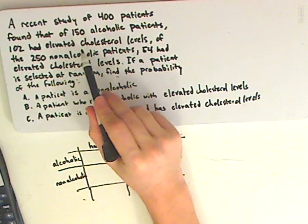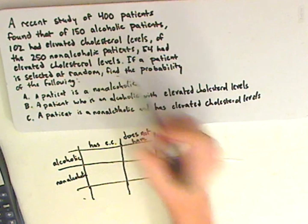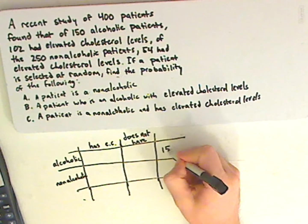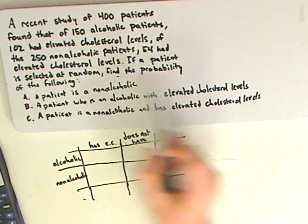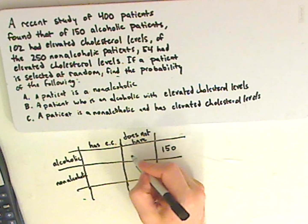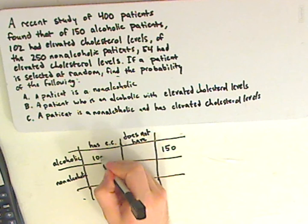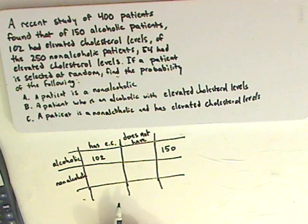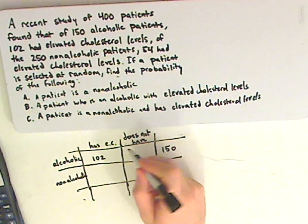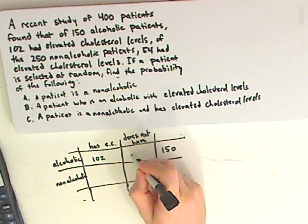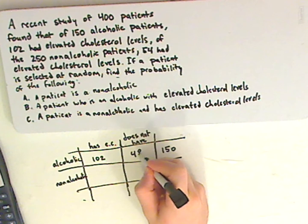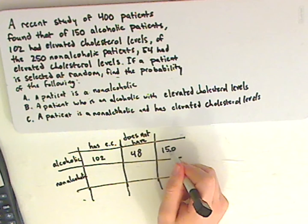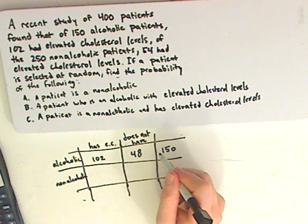All right, so out of 150 alcoholic patients, 102 had elevated cholesterol. So what that means is those who do not have that is 48. Right? Because both of these have to add up to 150.